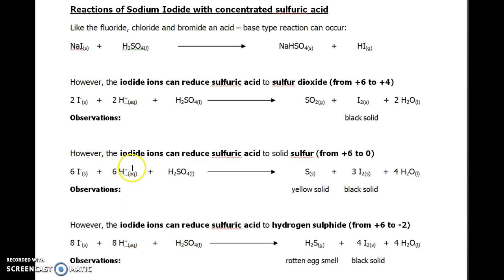We need an extra source of protons to balance up our waters. We've got four water molecules formed here to take account of the four oxygens in the sulfuric acid. We would form yellow and black solids in this case.